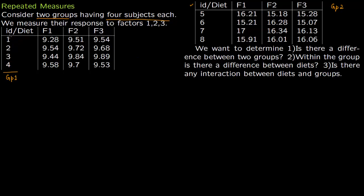Within a group, say subject 1 is given three different diets: diet 1, diet 2, diet 3, and the response of subject 1 is measured. Subject 1 responds 9.28 to diet 1, 9.51 to diet 2, and 9.54 to diet 3. This response could be pulse, blood pressure, sugar, or anything.